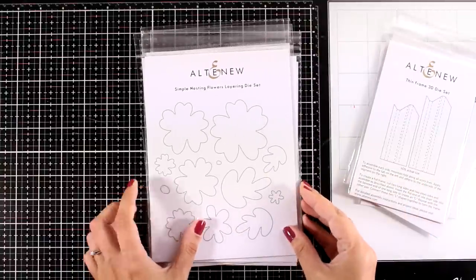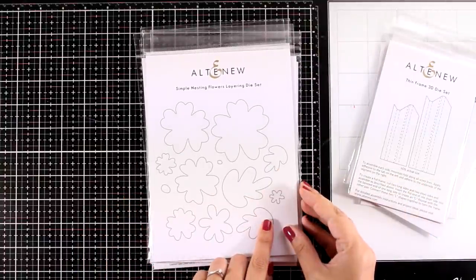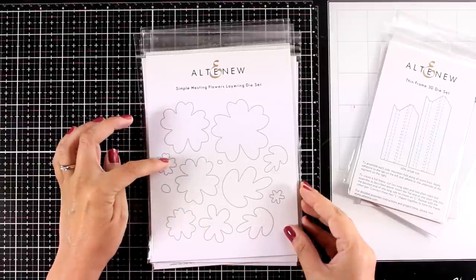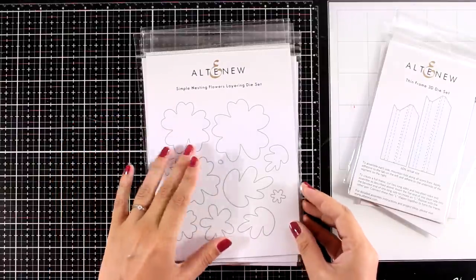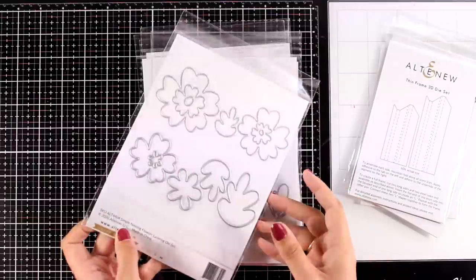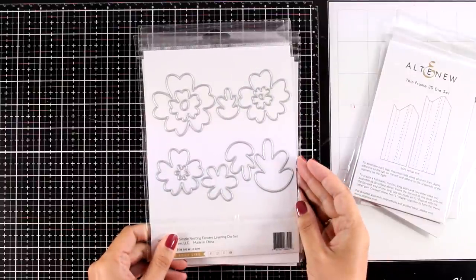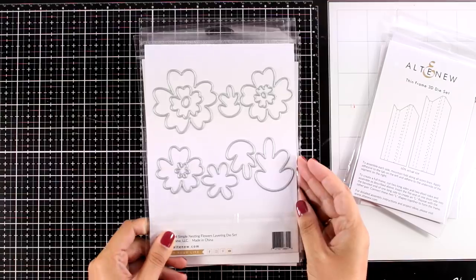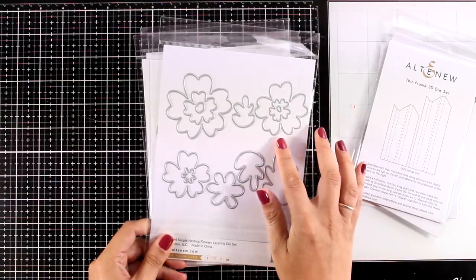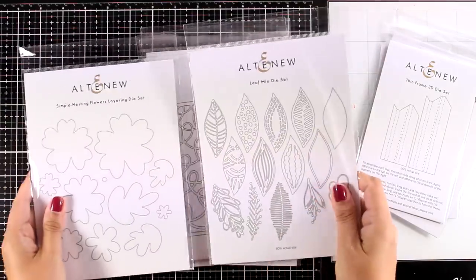And here's a very versatile one. This is the simple nesting flowers. You can cut out all those different shapes and layer them one on top of the other. There is no right or wrong here. Just be creative. I love the funky design of the flowers and the leaves and I'm sure you're going to have lots of fun using this die set.